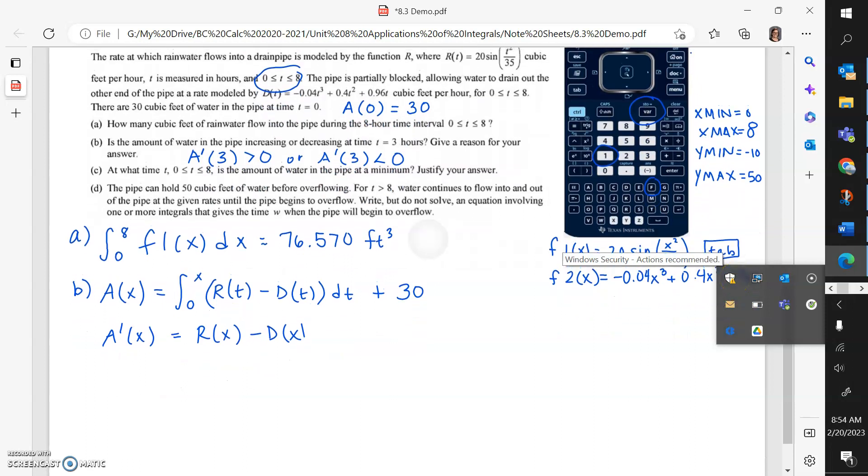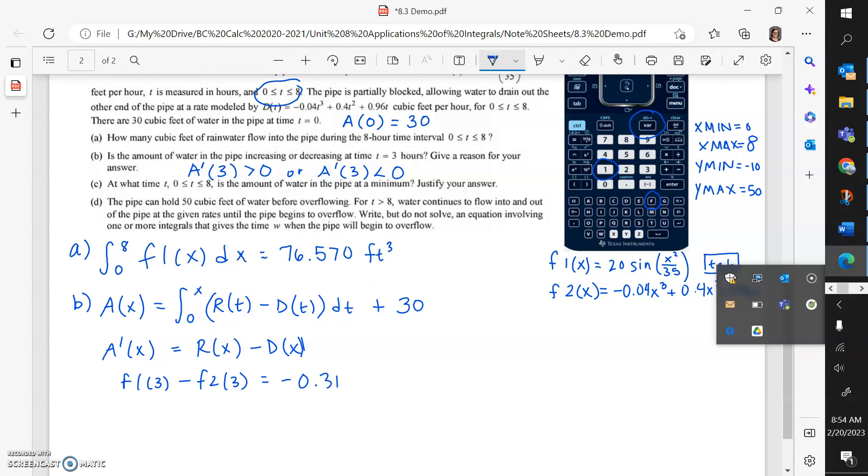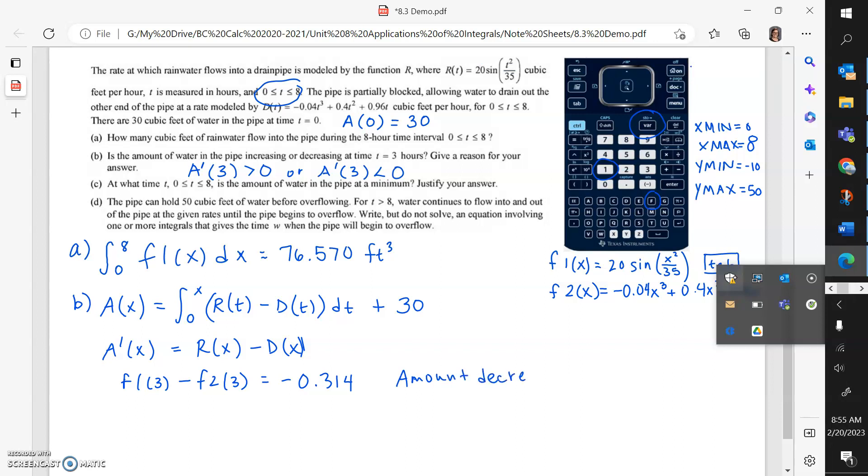If I want to talk about increasing or decreasing, I'm going to take a derivative of that function. Oh, the derivative of an integral, we're back where we started. And then the derivative of 30 is also 0, so I just need to plug 3 into that equation. I can type F1 of 3 minus F2 of 3, and it will spit out the number for me, negative 0.3136. And so now I can say the amount is decreasing, and the reason is A prime of 3 is less than 0.